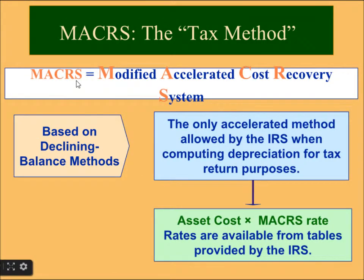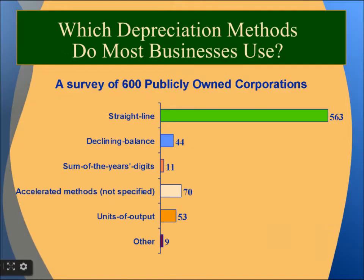This is MACRS — the Modified Accelerated Cost Recovery System. It is based on the declining balance method and is the only accelerated method allowed by the IRS for tax return depreciation. Depreciation is calculated as asset cost multiplied by the MACRS rate, with rates available from IRS tables. Surveys show most businesses use the straight-line method because it is easy to calculate.